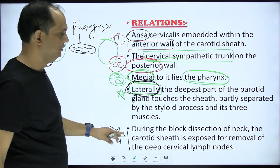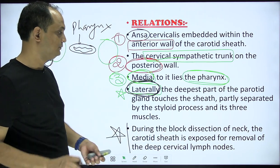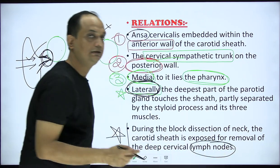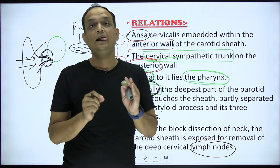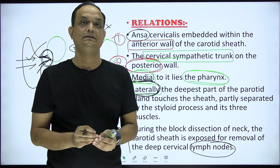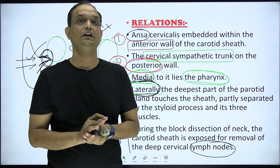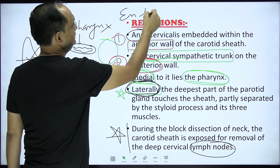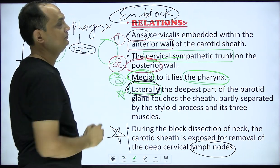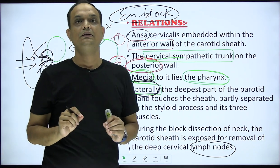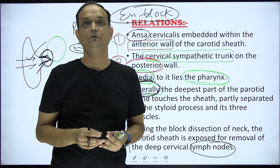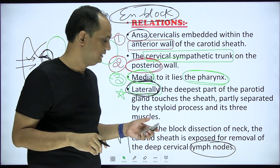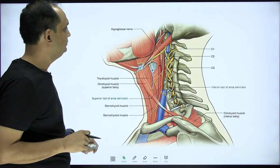During block dissection of the neck, the carotid sheath is exposed for removal of deep cervical lymph nodes. In exam questions about metastasis of carcinoma to the deep cervical lymph nodes, if the term 'block surgery' or 'N-block' is used, you have to remove all deep cervical lymph nodes including those inside the carotid sheath. So you have to open the sheath to take out these lymph nodes.